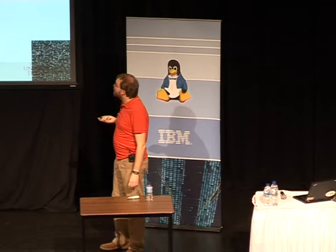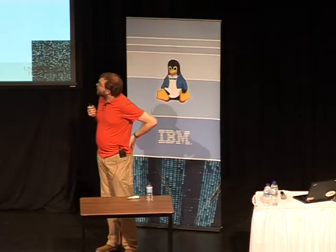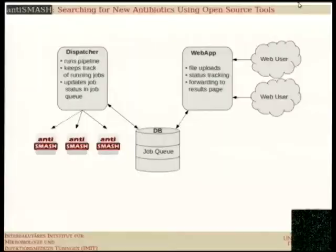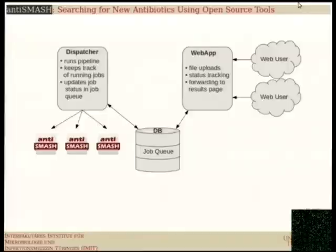This is a bit annoying if you're coming from a traditional open source background. The whole pipeline itself is pretty standard for a web application. We have a web app that takes user input — biologists like graphical interfaces, and our idea of a graphical interface was a website. We dump that into a database so we can run the actual antiSMASH pipelines on a different, more powerful machine.